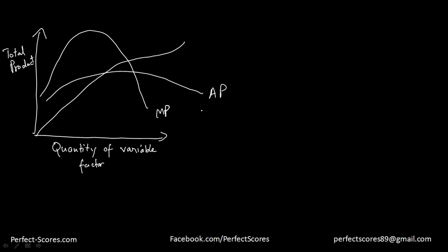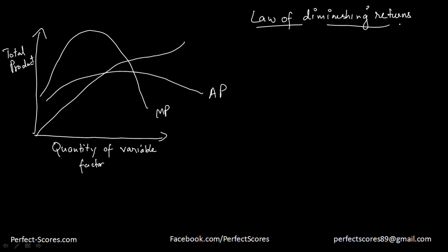So this was the average product, this was the marginal product. Now there is actually a law that you can deduce from here — it is known as the law of diminishing returns. As you can clearly see, as the quantity of variable factor increases, the average product and the marginal product increase to a certain level, become maximum, and after that they tend to decrease. That is what the law of diminishing marginal returns is.